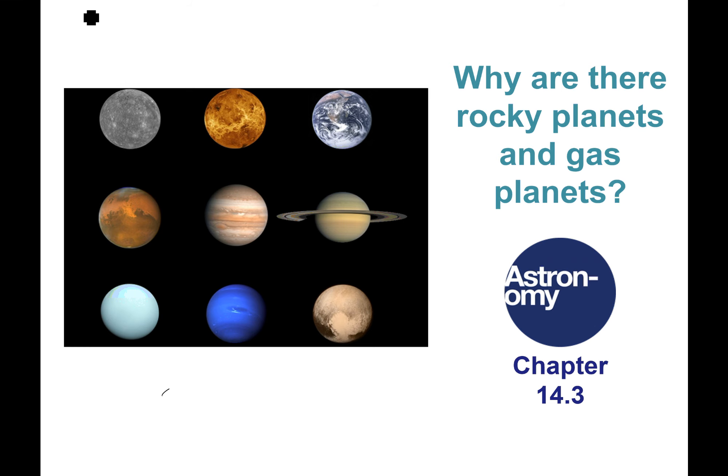This video is about why we have rocky planets and gas planets — why do we have so many different kinds of planets in our solar system? We talked last time about how planets formed from a disc around the protostar, so why do they look so different with different sizes and shapes? That's our topic for today.